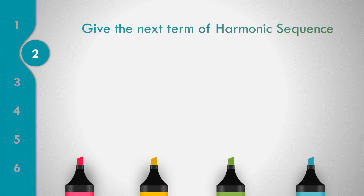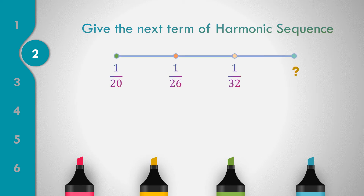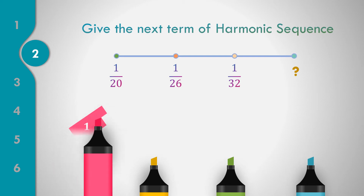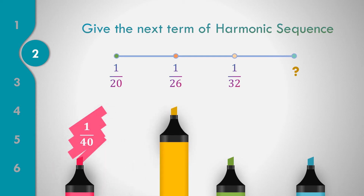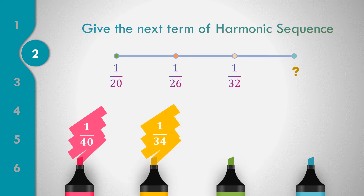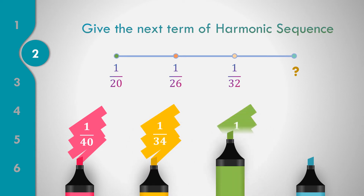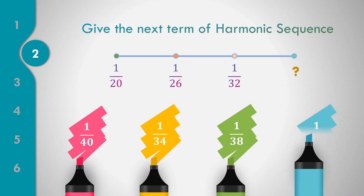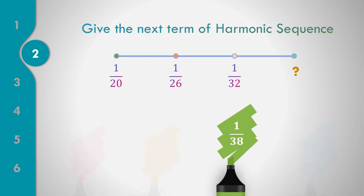How about number 2? Can you give the next term of the harmonic sequence: 1/20, 1/26, and 1/32? Do you think the answer is 1/40, 1/34, 1/38, or 1/36? The answer is equal to 1/38.